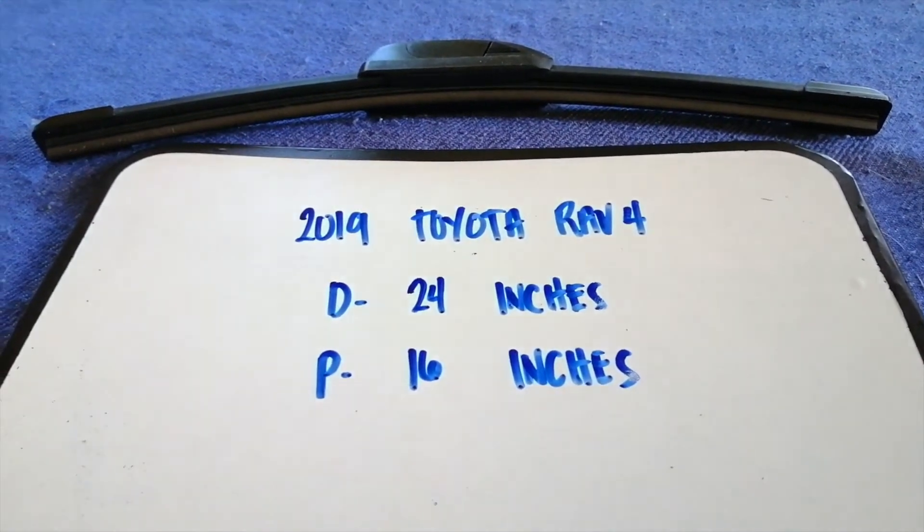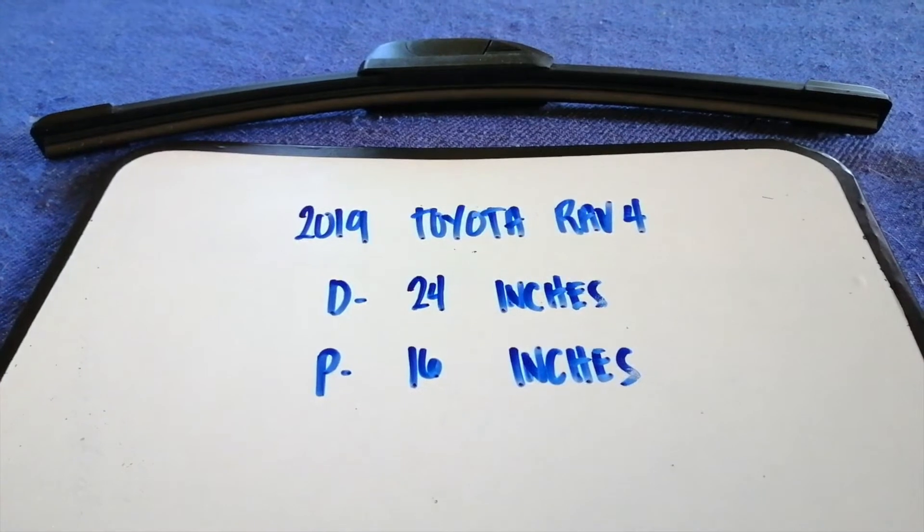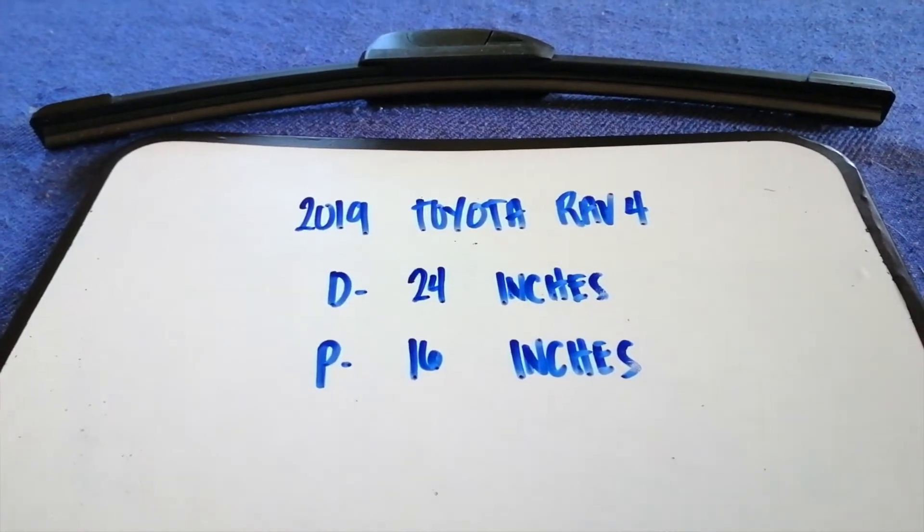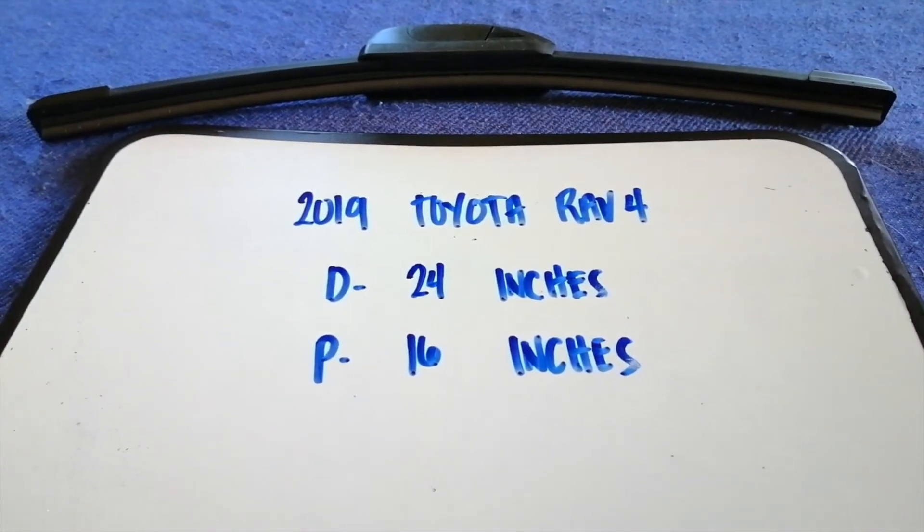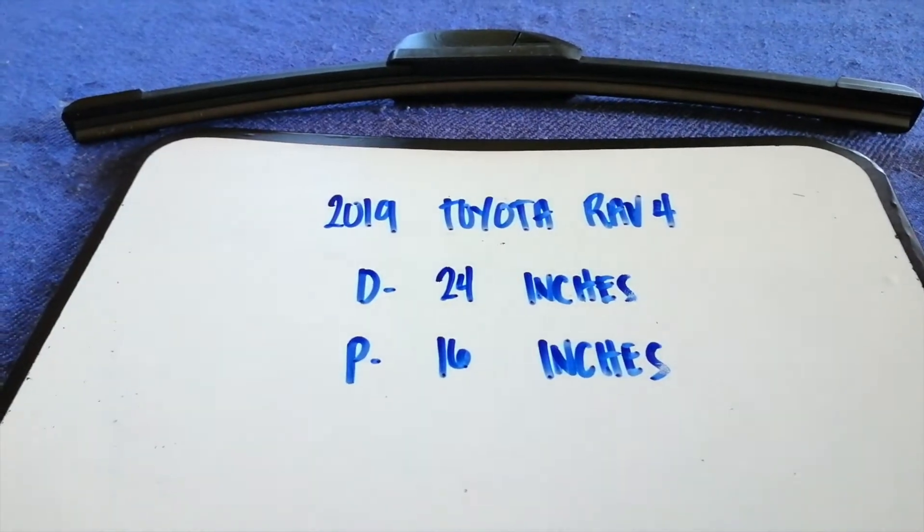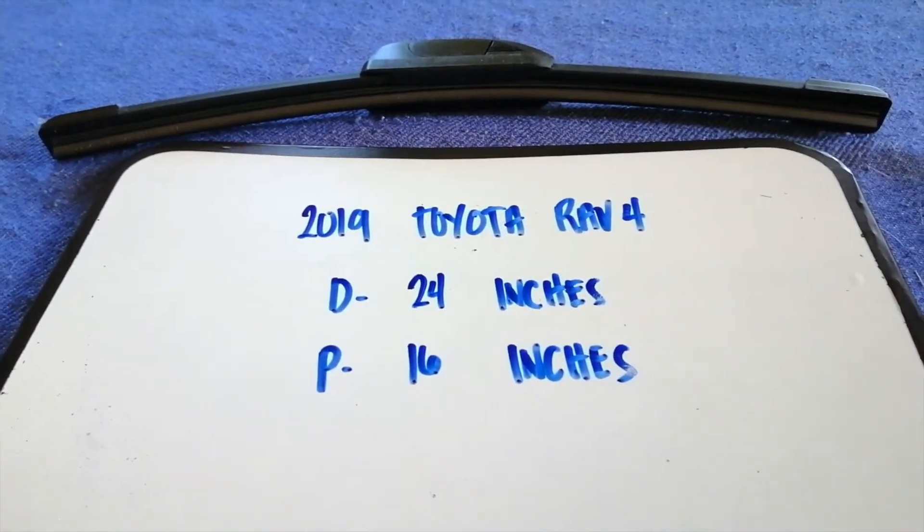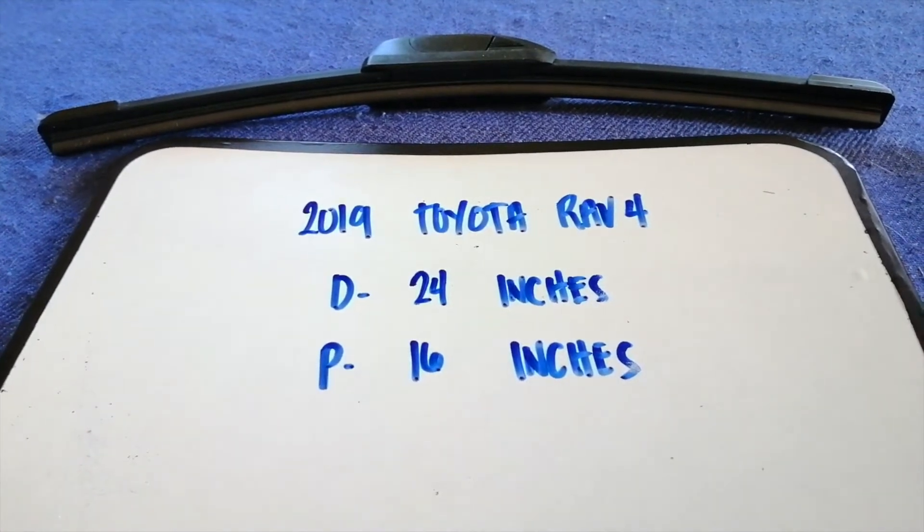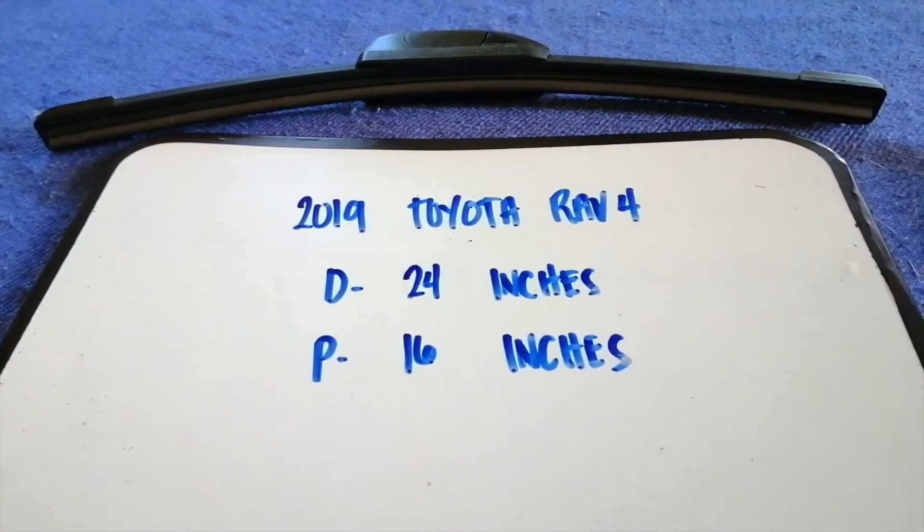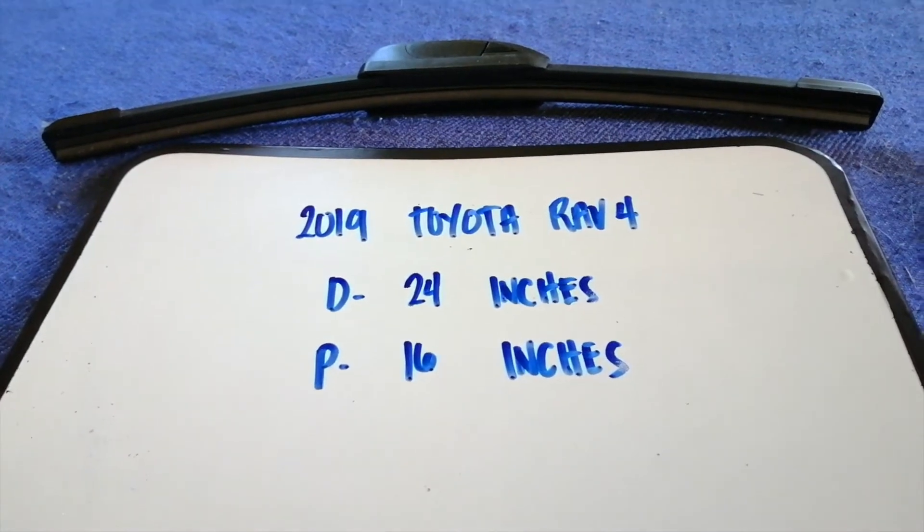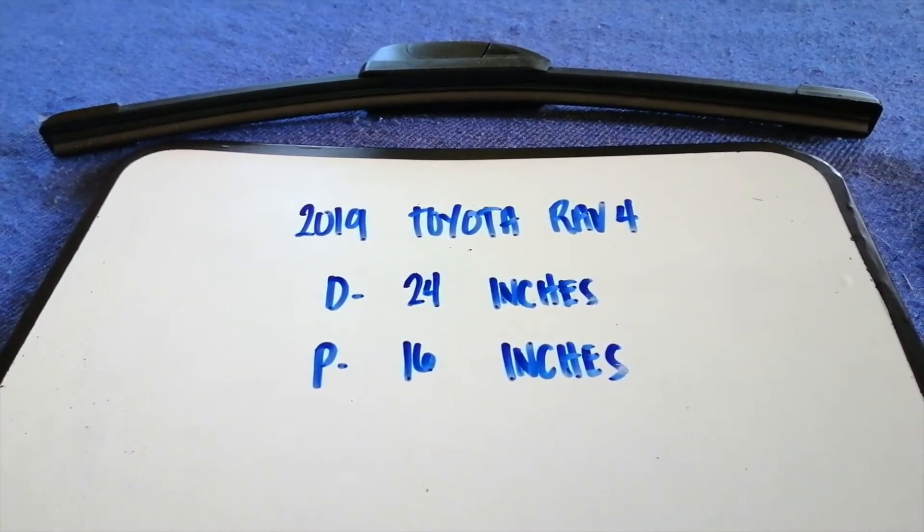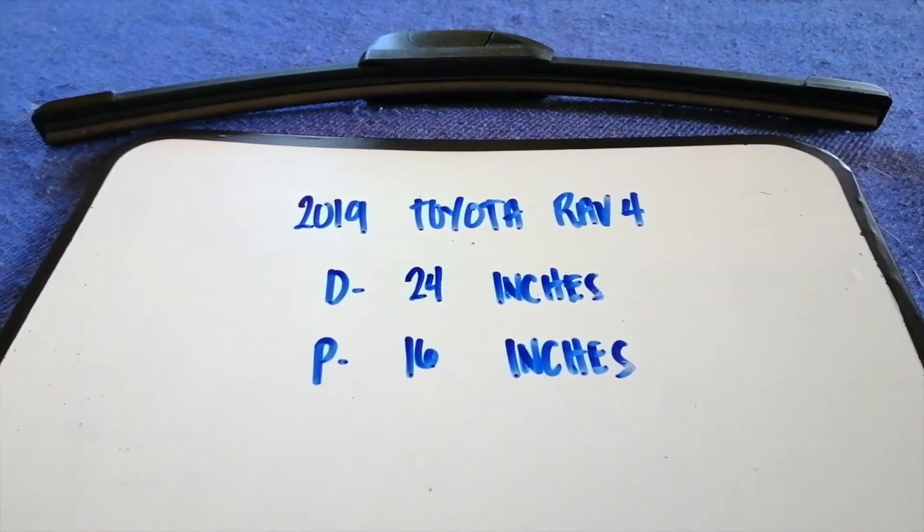If you're looking for the wiper blade replacement size for the 2019 Toyota RAV4, I have already looked it up. Just check the video description and I will try to leave the info there as well. The wiper blade replacement size for the 2019 Toyota RAV4 is 24 inches for the driver side and 16 inches for the passenger side.